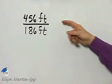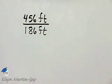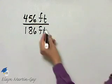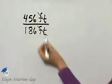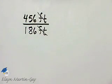We simply want to write this ratio as a fraction in simplest form. Because the units are the same, we can divide the units out. And then we want to simplify the fraction.